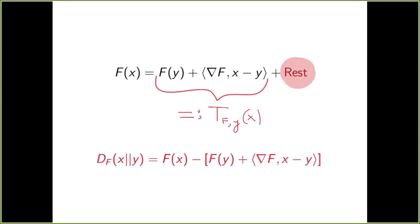To define the Bregman divergence, recall the Taylor approximation. So the Taylor approximation of first order is the first two terms here in this formula, which we'll call T_f_y of x. And the Bregman divergence from x to y is precisely the value of this rest that is left. So what the Bregman divergence from x to y actually tells us is how well does this first order Taylor approximation of f approximate the exact value of f at x.